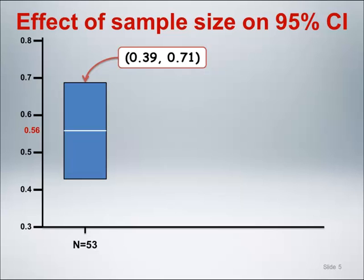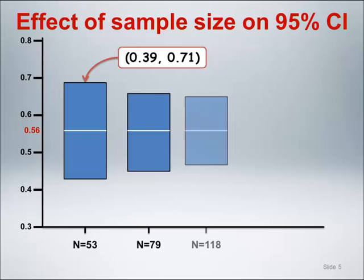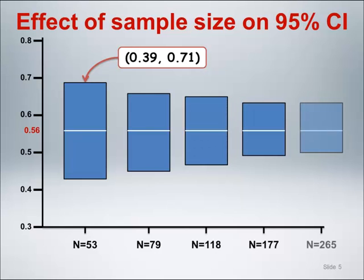Another important factor is the impact of total sample size on the interval width. Keeping the sample survival proportion fixed at approximately 0.56, increasing the overall sample size will result in successively more narrow confidence intervals.